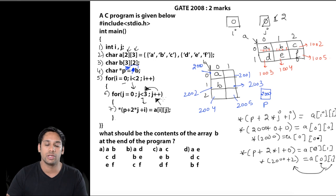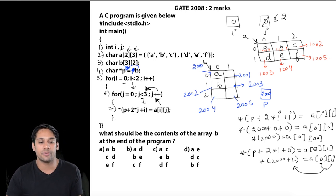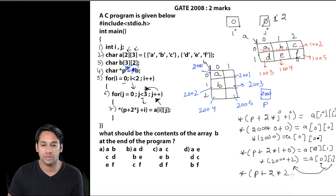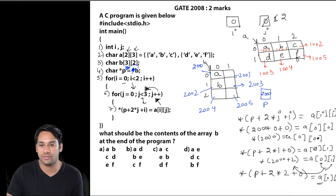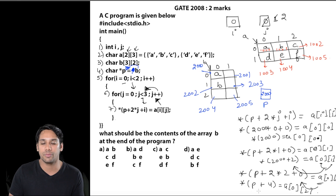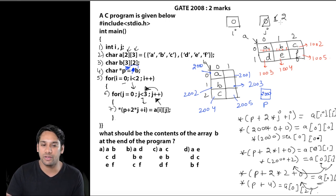We increment j to 2. Since 2 < 3, we execute line 7: *(P + 2*2 + 0) = A[0][2], which is *(2004) = A[0][2]. So P = 2000, 2000 + 4 = 2004. At index location 2004 we store C. Then j increments to 3; since 3 is not less than 3, we exit the inner for loop.